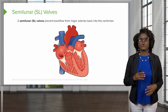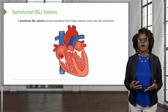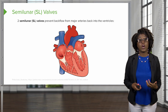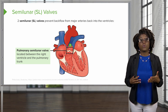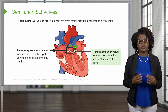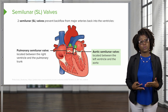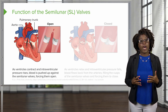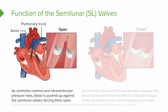The semilunar valves are going to have a little bit more activity. These are going to be responsible for preventing backflow from our major arteries back into the heart. On the pulmonary side, the pulmonary semilunar valve is going to be located between our right ventricle and the pulmonary trunk. On the aorta side, the aortic semilunar valve is going to be located between the left ventricle and the aorta. Both of these valves are going to open and close in response to pressure changes in the heart. The semilunar valves consist of three cusps that roughly resemble a half moon, which is where they get their name.